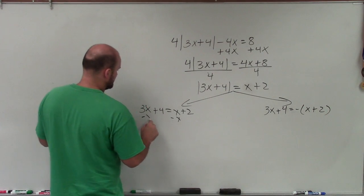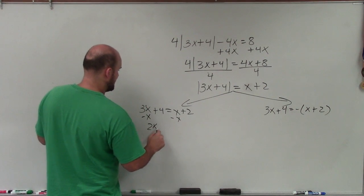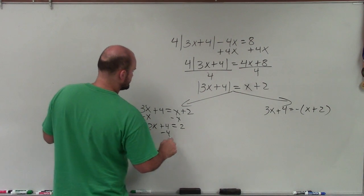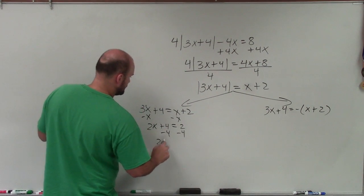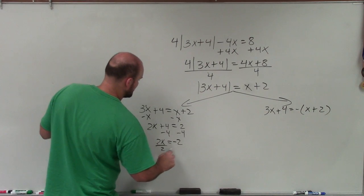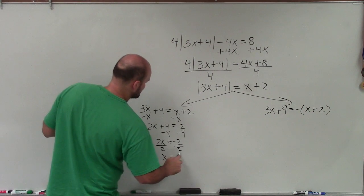So I subtract x, subtract x, and I have 2x plus 4 equals positive 2. Subtract 4, subtract 4. 2x equals negative 2, divide by 2, divide by 2. x equals negative 1.